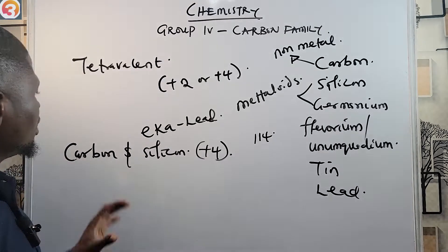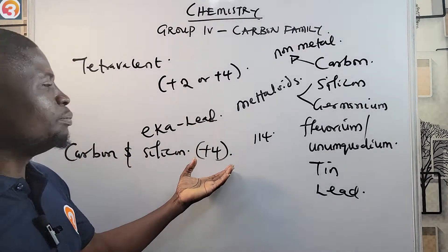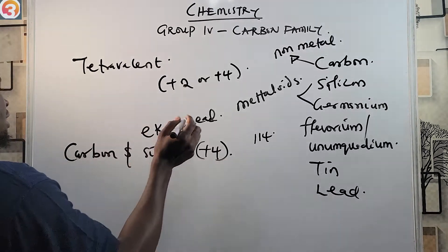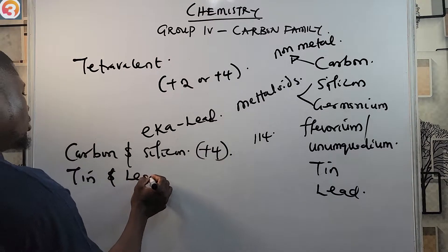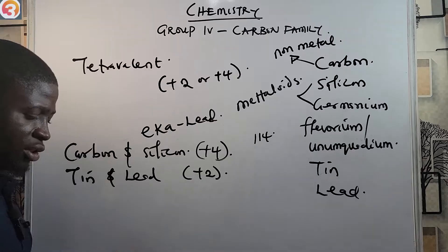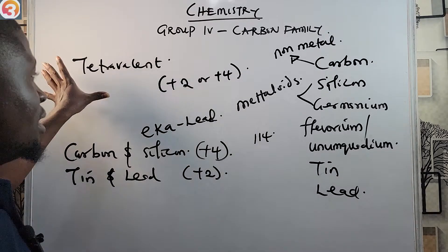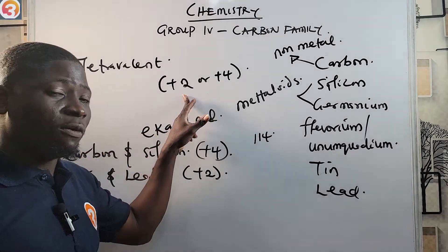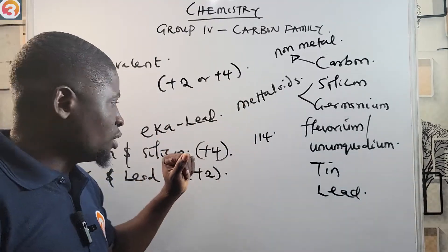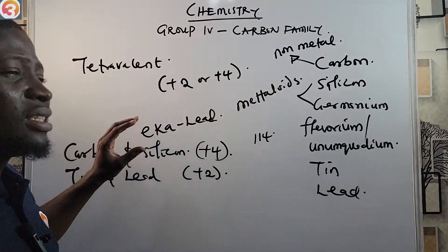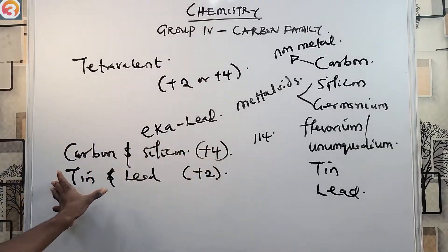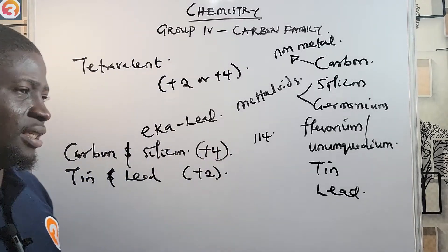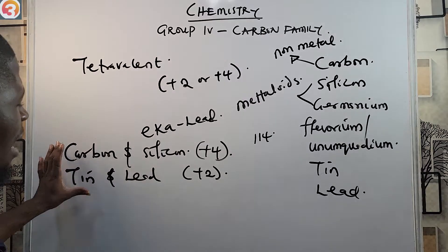Carbon and silicon are most stable in the +4 oxidation state. Tin and lead, on the other hand, are more stable and more comfortable in the +2 oxidation state.